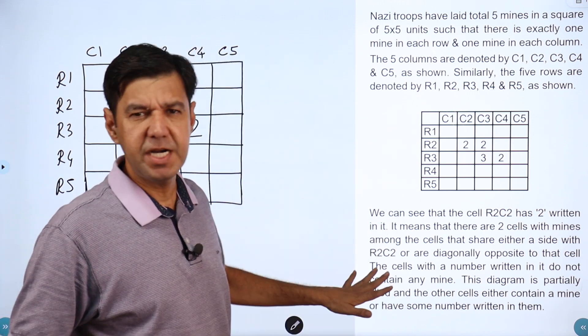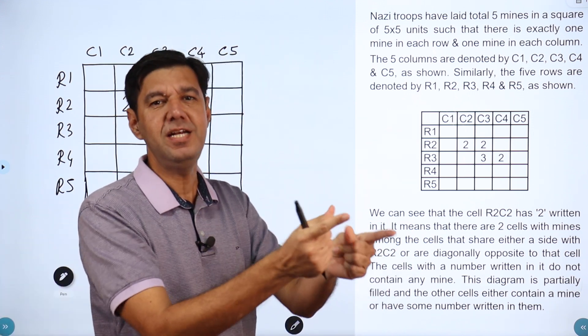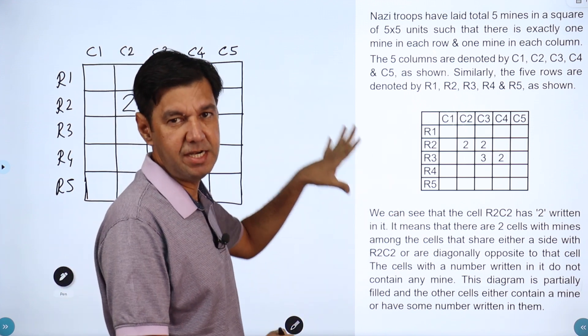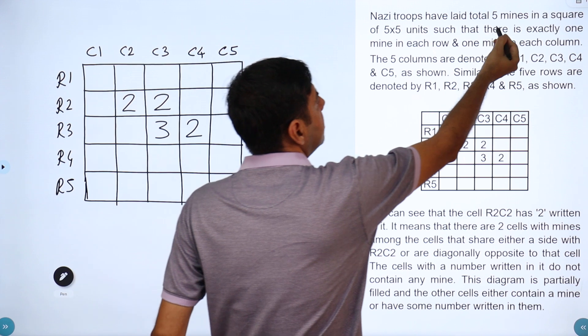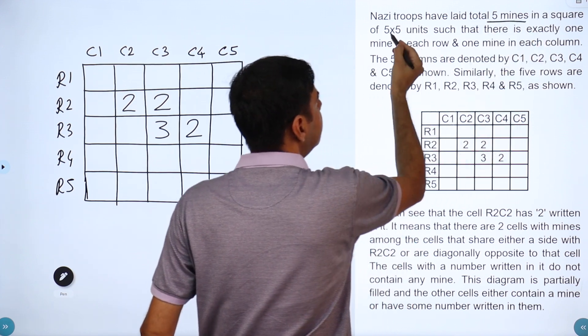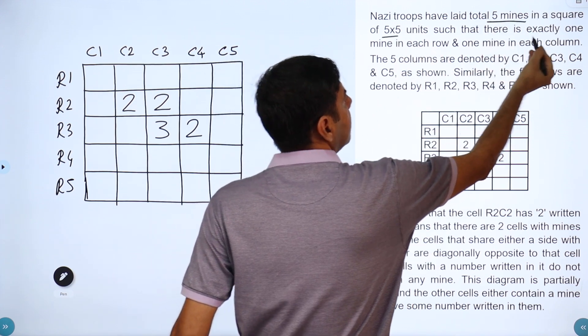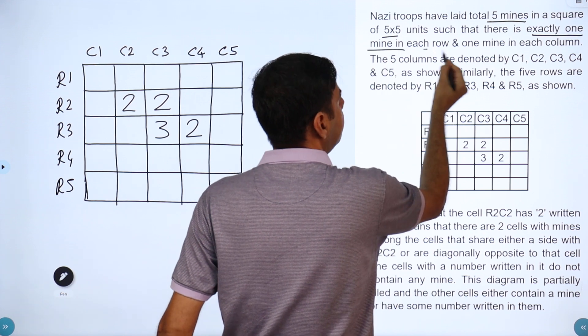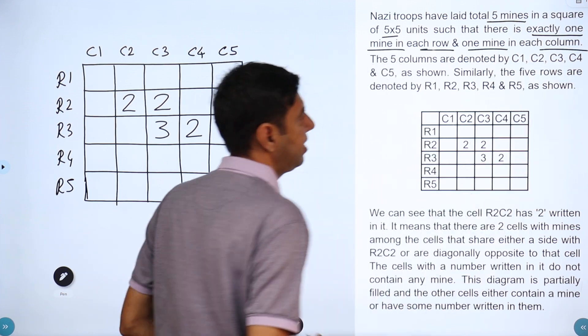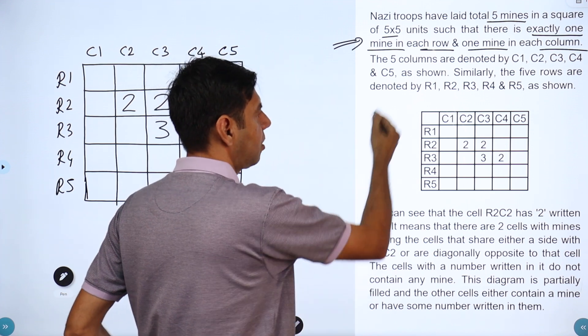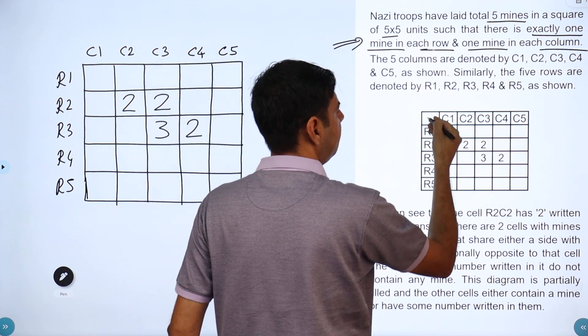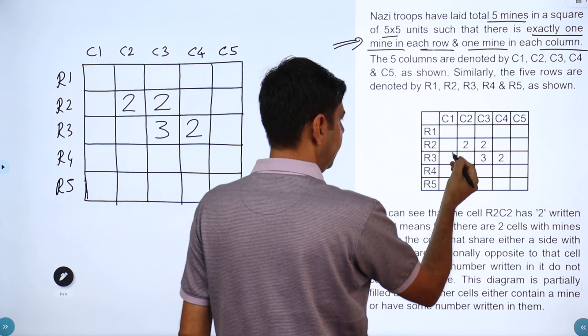This is a doubt asked by a student. It's pretty easy and you should get it immediately. There's a total of five mines in this five by five grid such that there's exactly one mine in each row and one mine in each column. This is what makes it really very easy. The columns are denoted as C1 to C5, rows as well, and there are some numbers given.